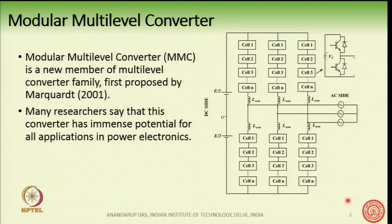However, one company saw the potential of the converter and started plans to commercialize it. Around 2007–2008, based on this converter, the first high-voltage DC transmission was commercially launched. When it was launched, there was a lot of enthusiasm and activity on this converter, and people started realizing the potential and benefits of MMC.